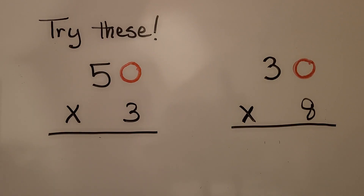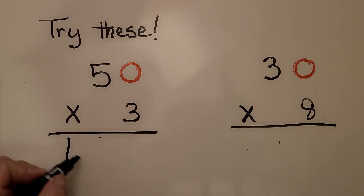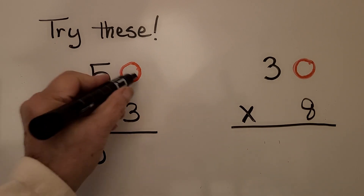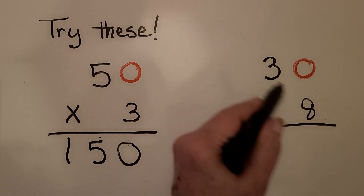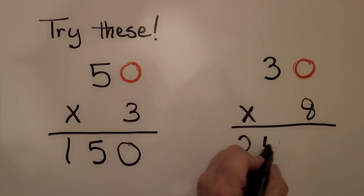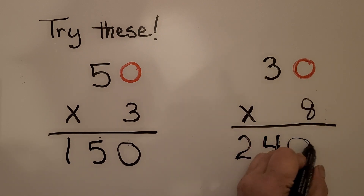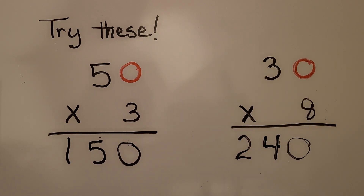I want you to try these. Can you do 50 times 3 quickly in your head? What do you think the product would be? If you thought 5 times 3 is 15 and we have one zero, so it's 150 — you're correct. How about 30 times 8? If you thought 3 times 8 is equal to 24 and we have one zero, so the product is 240 — you're correct again.